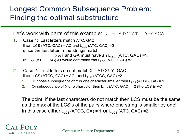Eventually you'll get the hang of dynamic programming. Here's the example: X is a short DNA sequence and Y is another short DNA sequence. We'll take a couple of cases. Suppose the subsequences we're dealing with are ATC from X and GAC from Y. By inspection, the longest common subsequence is just AC, and so its length is 2.